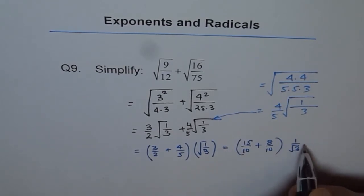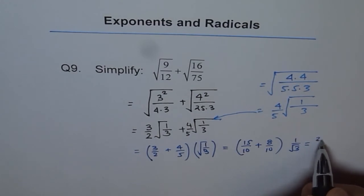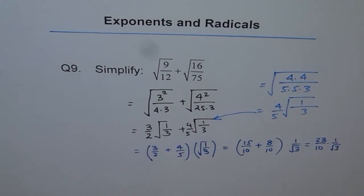So it becomes 15 over 10 plus 8 over 10 times 1 over square root 3. Which is equal to 15 plus 8, 23 over 10 times 1 over square root 3. So that is your answer. So that is how we can add the radicals.